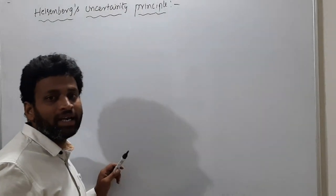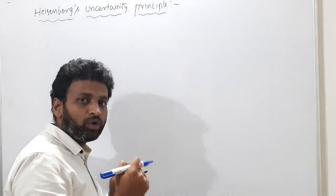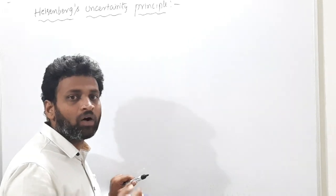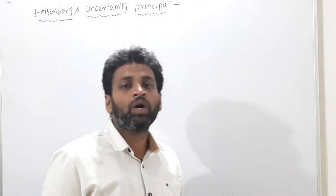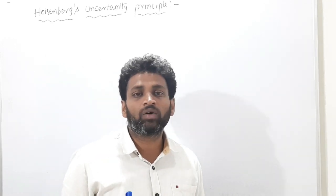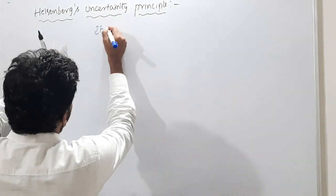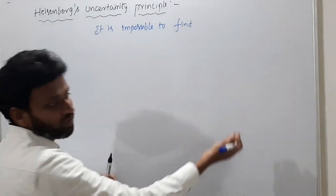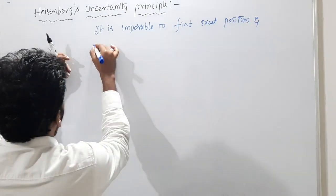This principle was given to find the position and momentum of an electron. Can we know the position and momentum of an electron exactly at one particular time? He said no. It is impossible to determine the exact position and exact momentum of an electron simultaneously and accurately.